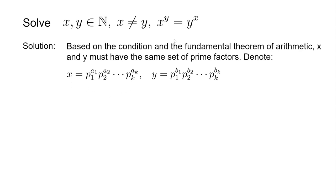Now we can plug those two back into the original equation. We get a1 times y equals b1 times x, all the way to ak times y equals bk times x.